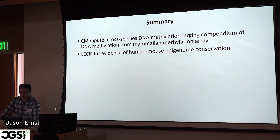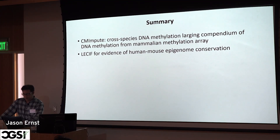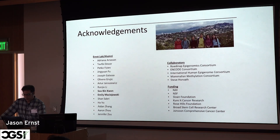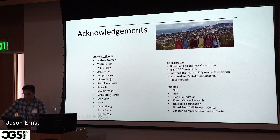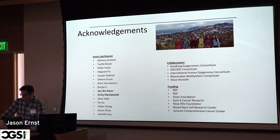To summarize, I presented CM-Impute, a method for cross-species DNA methylation imputation leveraging the large mammalian methylation array compendium, and LUCIF for evidence of human-mouse epigenome conservation. I'd like to acknowledge Subin Kwan, who led the LUCIF work, Emily, who led the CM-Impute work, and the Mammalian Methylation Consortium led by Steve Horvath. I'm happy to take any questions.